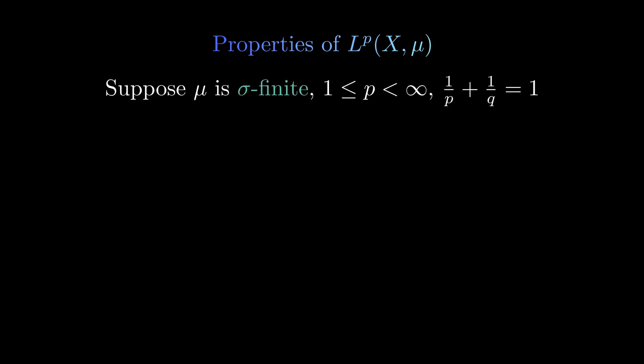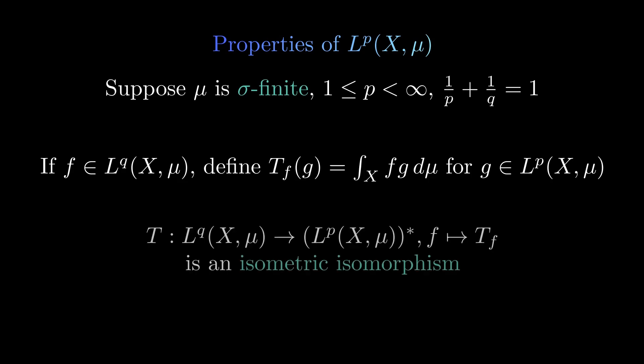Another property is that if the measure is σ-finite and p is not equal to infinity, we can describe the dual space of the L^p space very well. To do this, we need the conjugate q of p. We can then define for any function in the L^q space a functional T_g on the L^p space. These functionals are not just a subclass of all the functionals, but instead all of the functionals are given in this form. Additionally, the implied isomorphism is also isometric, so the norm stays the same. This result allows us to understand the dual space of certain L^p spaces very well.